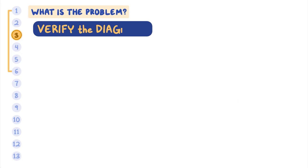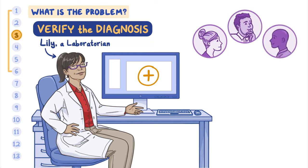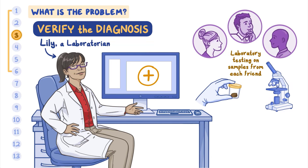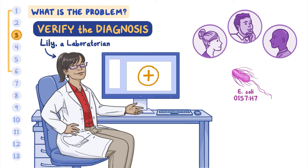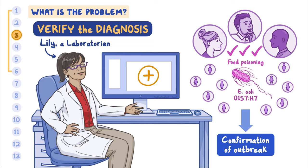The next step is to verify the diagnosis. Laboratorians like Lilly can identify the infectious agent causing the illness and confirm cases with a positive laboratory test. It is important to test as many suspected cases as possible to make sure symptoms are being caused by the same infectious agent. In the case of your sick friends, Lilly would conduct laboratory testing on stool samples submitted from each friend. If the samples tested positive for a foodborne infectious agent like E. coli O157:H7, she would verify a diagnosis of food poisoning for each friend. Lilly can help confirm that an outbreak is occurring when she sees many similar test results, like if all your friends test positive for the same foodborne infectious agent.